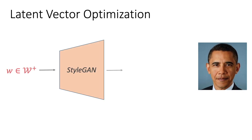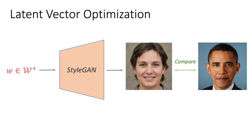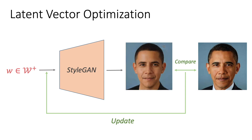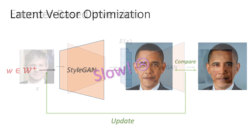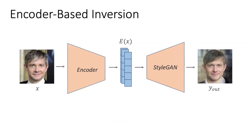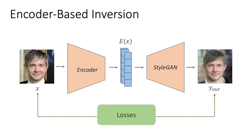Most works studying inversion rely on a per-image optimization into an extended latent space called W+. Although this leads to a very accurate reconstruction, it typically requires several minutes for inverting a single image. Other recent works design an encoder to learn how to directly map the image into its latent representation. Since the inversion is performed using a single pass through a network, it takes a fraction of a second, but is less accurate than optimization.